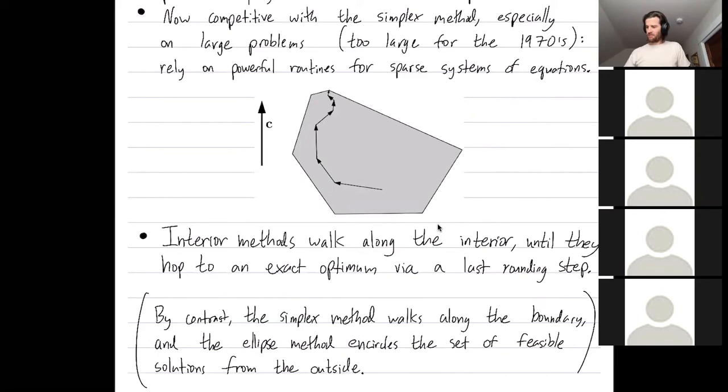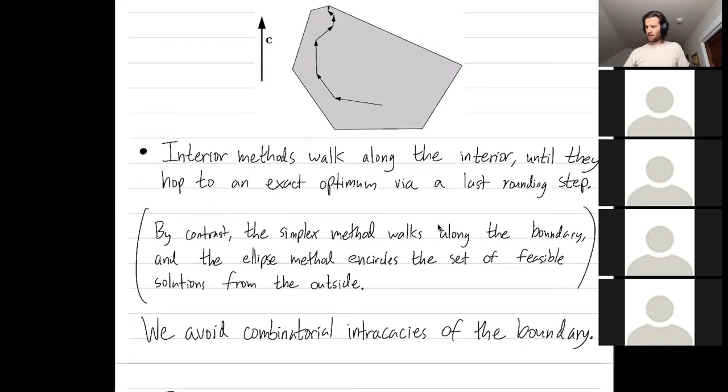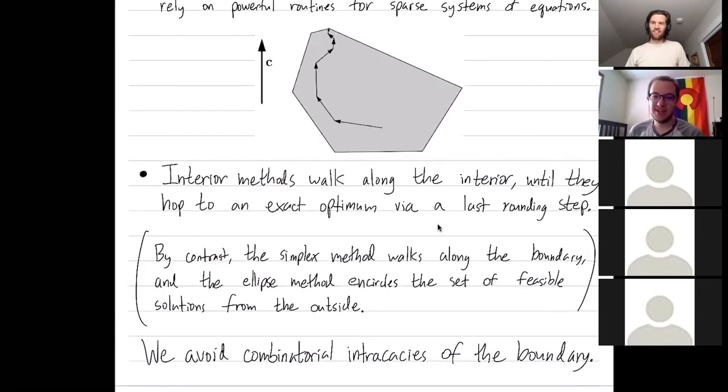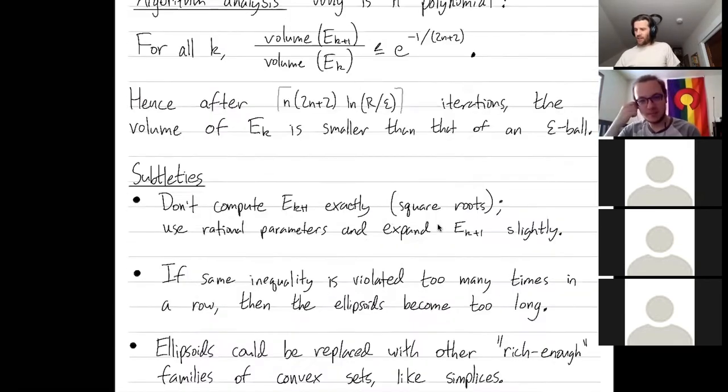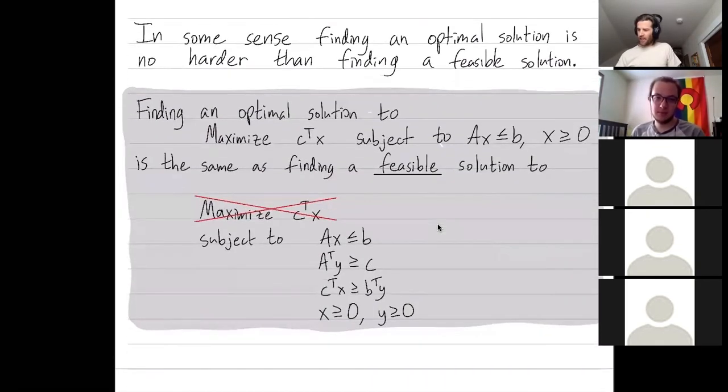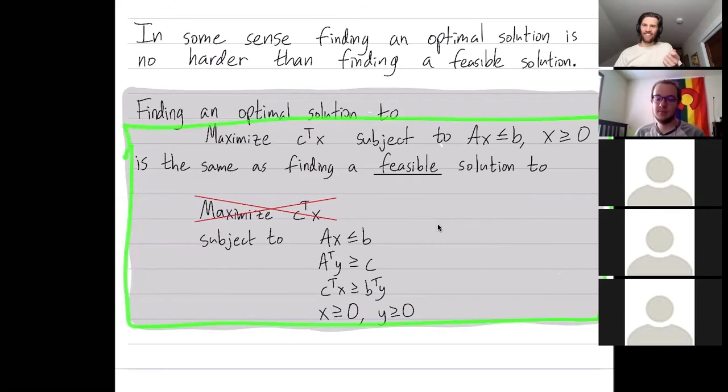Questions or comments so far? Quick question, and you probably mentioned this on Tuesday, but I forgot. So it's computationally the same to find a feasible solution as it is to get an optimal solution. My question with the ellipse method, it makes sense finding a feasible solution, but do you also use the ellipse method to get the optimal solution? Like is it a similar process? Yes, because you apply the ellipse method on this sort of combination of a primal problem combined with its dual in which there's only one feasible solution and the feasible solution is optimal.